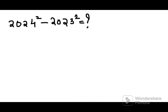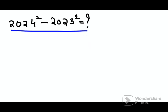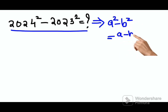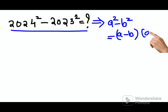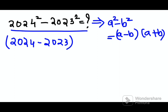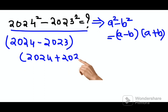Welcome everyone. Today we are going to solve a tricky indices or square problem: 2024 squared minus 2023 squared. Before starting to calculate, remember this is in the form of a squared minus b squared, which is nothing but (a minus b) into (a plus b). So that would be (2024 minus 2023) into (2024 plus 2023).